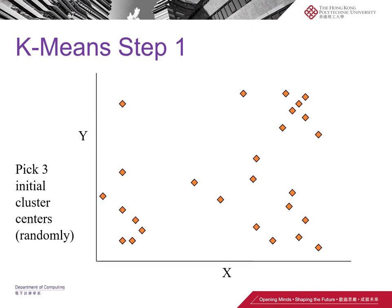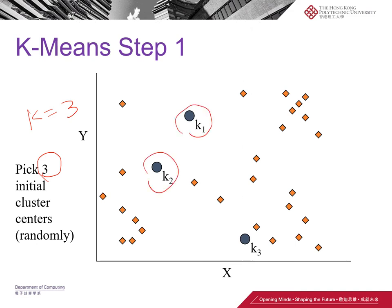That may sound a little abstract, so let's take an exact example. At the very beginning, we have a lot of samples inside the feature space — a lot of points. To cluster them into three groups, we set k equals three, meaning we want three clusters. Since we don't know where the cluster centers are, we randomly pick three of them — k1, k2, k3 — as the first set of assumed centers.